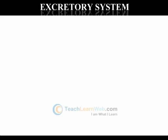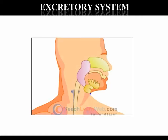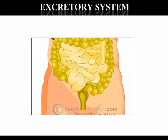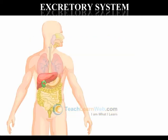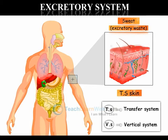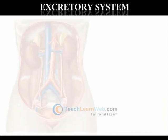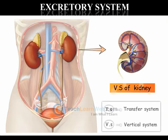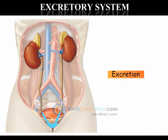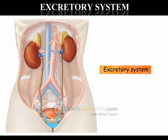Excretory system: The metabolic processes of the body produce many waste and toxic substances which must be removed from the body at periodic intervals. The process of removal of waste from the body is called excretion. It is performed by a special system called the excretory system.